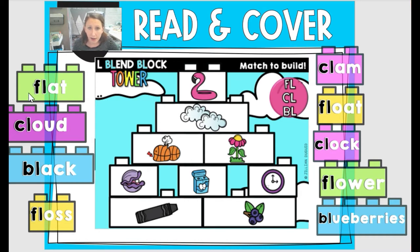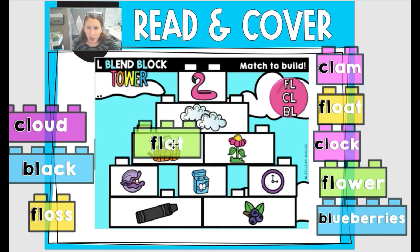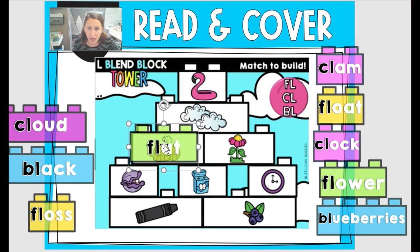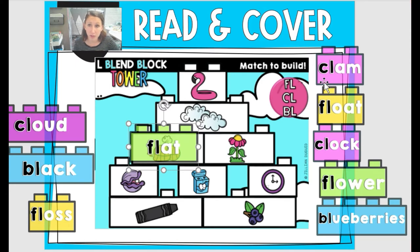Here I have FL-AT. Flat. So what picture looks like it's flat? Good job — it would be the basketballs here, so they are flat. Let's try this one: CL-AM. Clam. Do you see how I break them apart and then put them all together? I read the black letters first and then I read the white ones.